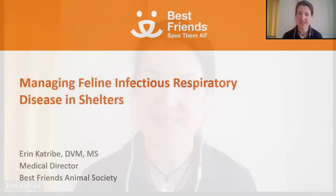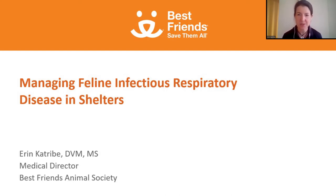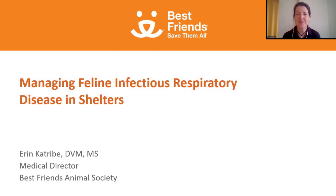Welcome everyone. Today we'll be talking about feline upper respiratory disease in shelters. It turns out the most important thing we can do to reduce upper respiratory disease in our shelter cats is attainable for all shelters and all organizations, regardless of your size or if you have a veterinarian on staff. This is a disease we can control, and we can make life better for our shelter cats. With better management, it means we can save more cats' lives.